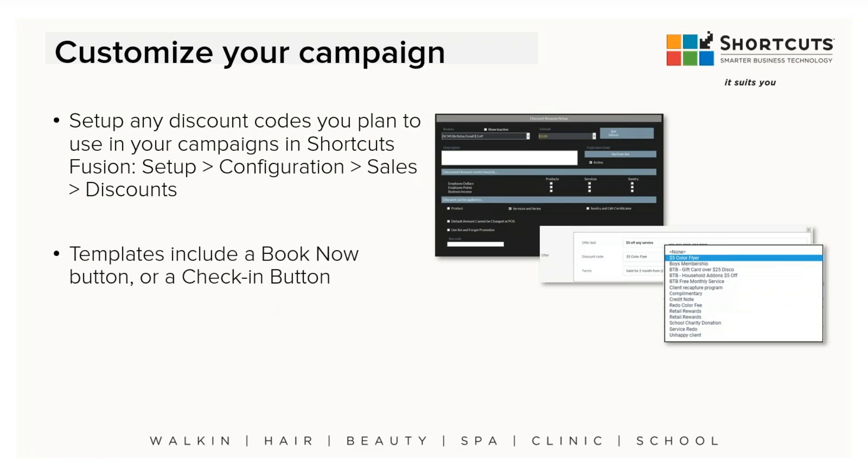Shortcuts Marketing actually lets you see how successful your campaigns were. At the end of the year, you can see how many birthday emails you sent and how many customers actually used their birthday coupon. This is how Shortcuts tracks that — so make sure you set up your promotions and coupons first in the point of sale, then select those coupons when building your marketing campaign.